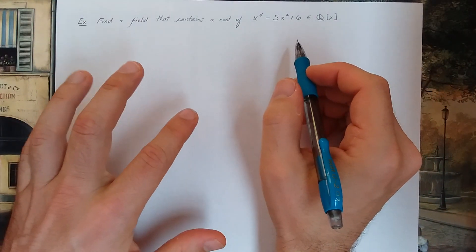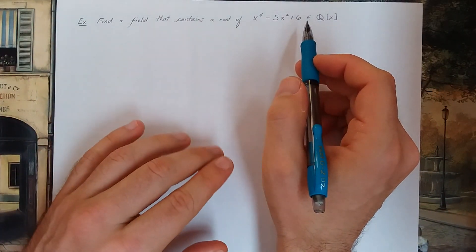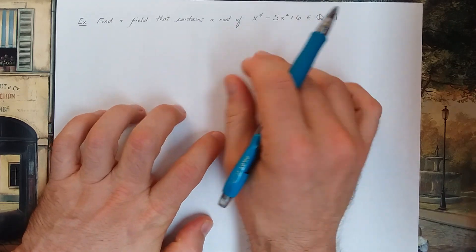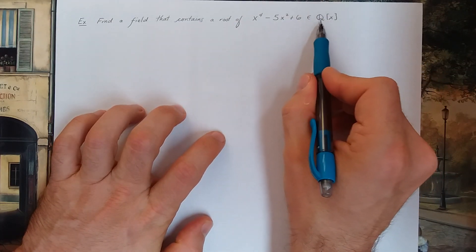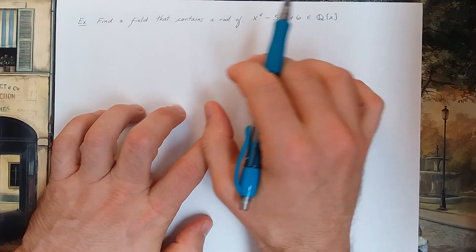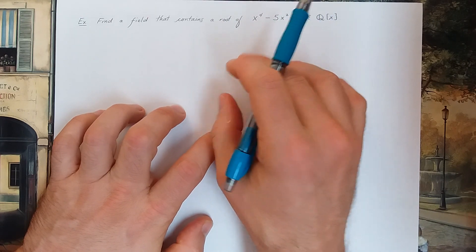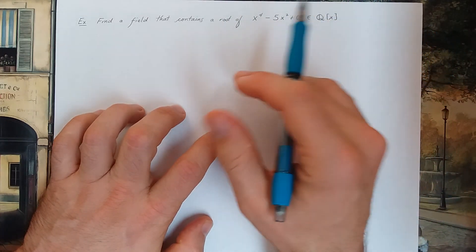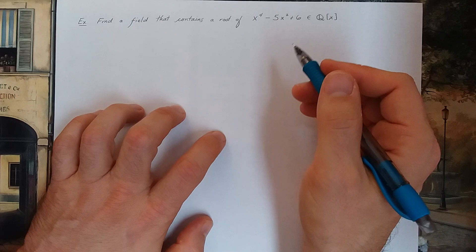So this video will contain one more example of the fundamental theorem of field theory that says that if you have a polynomial with coefficients in some field without a root, then you could extend that field, enlarge it, to a new field E that does contain a root.